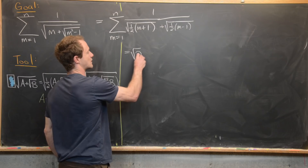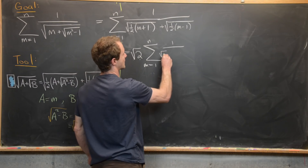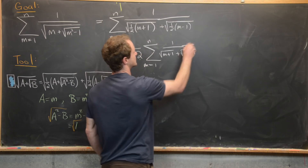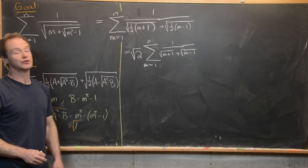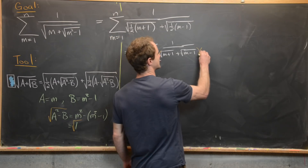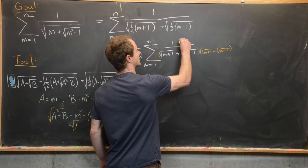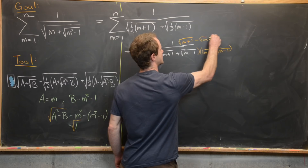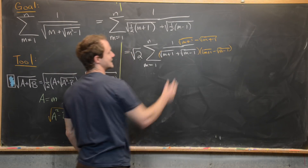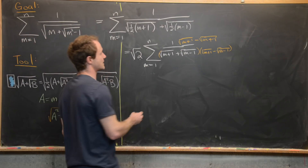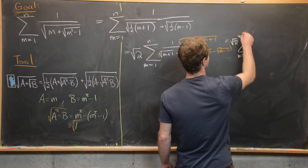We can bring a square root of 2 out front, and now we have the sum m equals 1 to n of 1 over radical m plus 1 plus radical m minus 1. Now we'll use the standard trick: rationalize the denominator by multiplying numerator and denominator by radical m plus 1 minus radical m minus 1. When we multiply out the denominator using the difference of squares formula, we get m plus 1 minus (m minus 1), which equals 2.